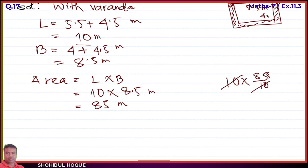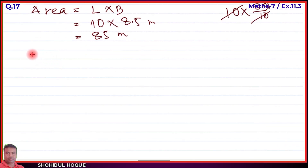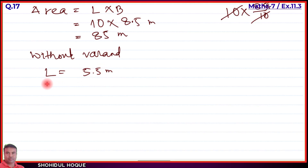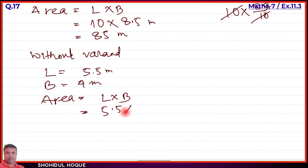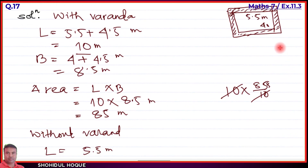Without baranda: length = 5.5 meters, breadth = 4 meter. Area = Length × Breadth = 5.5 × 4 = 22 meter square. That is the area of the room without baranda.